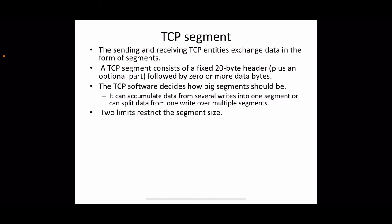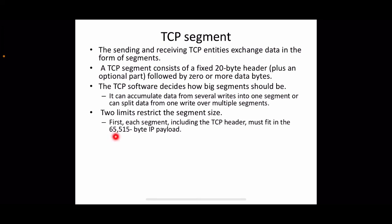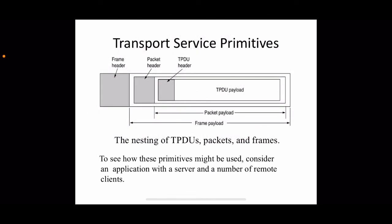Two limits restrict segment size. First, each segment including its TCP header must fit within the IP payload — the maximum data the IP datagram can carry. Second, each link has a Maximum Transfer Unit (MTU), which restricts how much data the link can handle at a time. So both the IP payload constraint and the link's MTU place an upper bound on segment size.